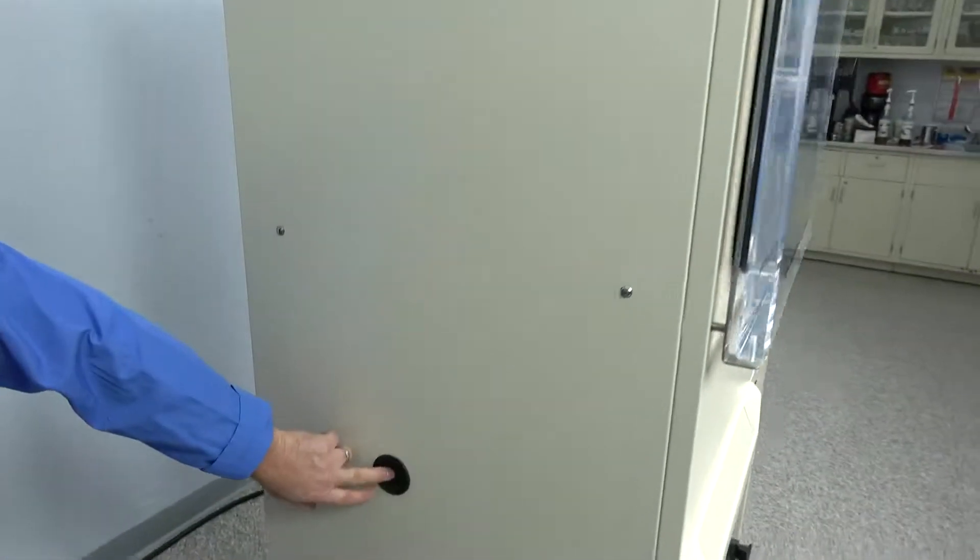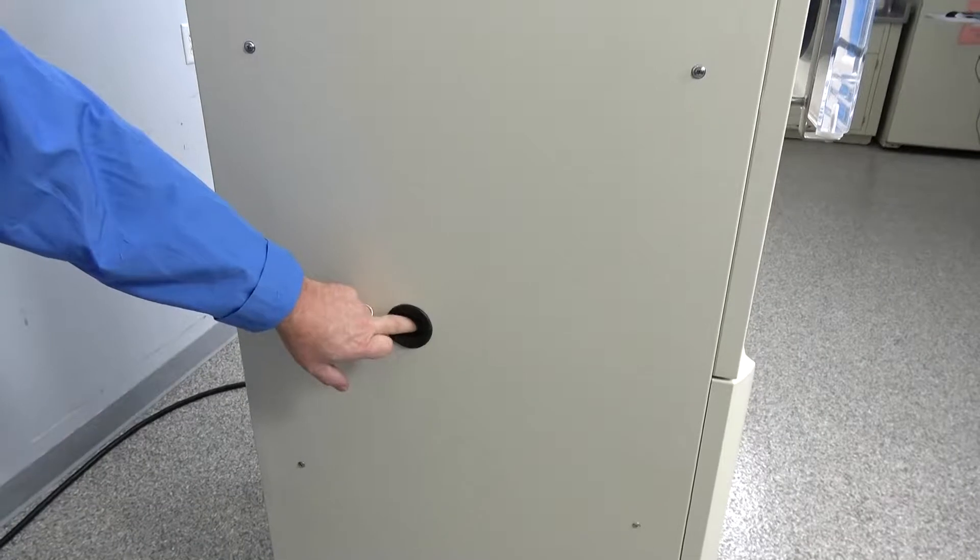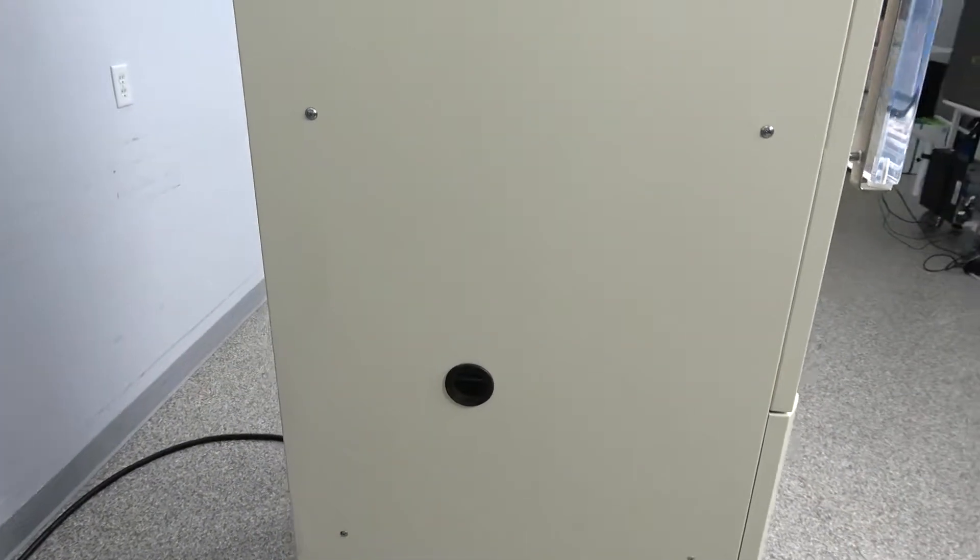We did replace the solenoid valve, and it sits in here. This is where you're going to plug in your air for the actuator, and that will control the isolation valve there.